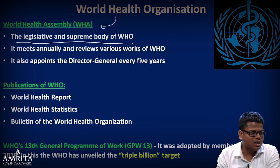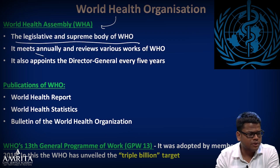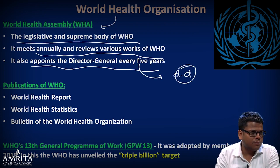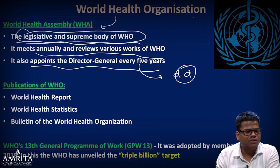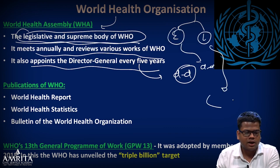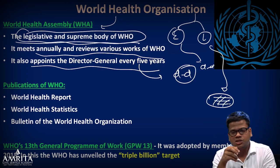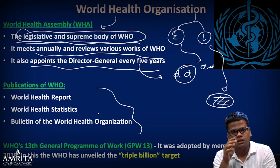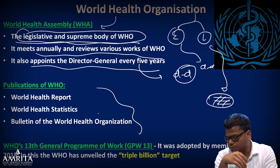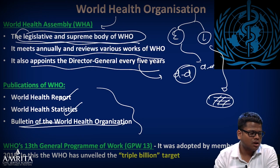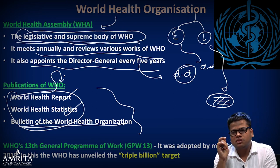The World Health Assembly is the legislative and supreme body of WHO. It meets annually, reviews WHO's work, and appoints the Director-General for five years. The Director-General handles day-to-day operations. WHO's key publications include the World Health Report, World Health Statistics, and the Bulletin of the World Health Organization. Remember reports that are not intuitively linked to their organization — those are the ones to study carefully.